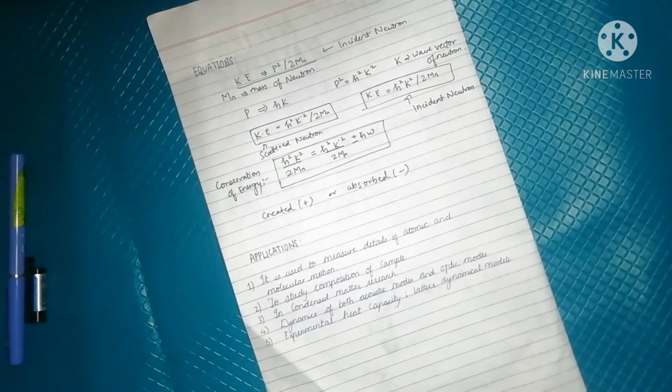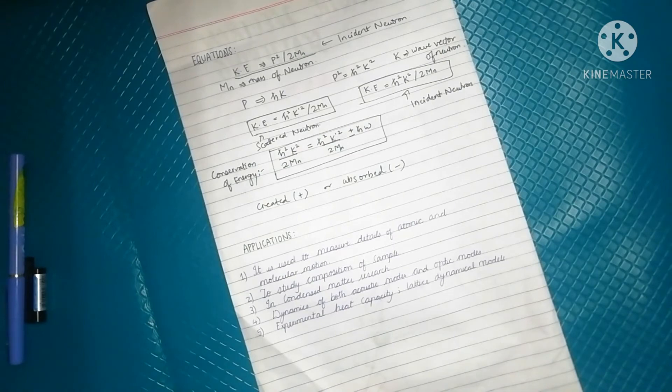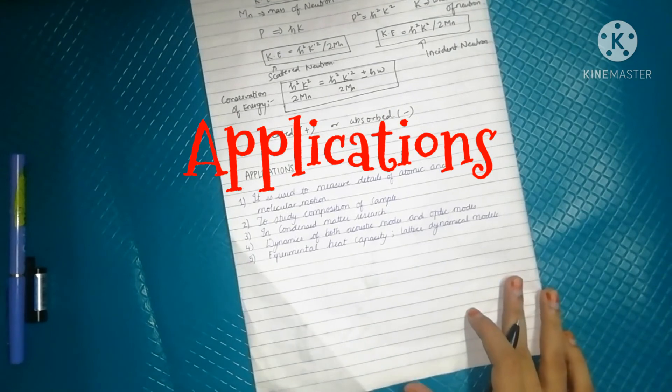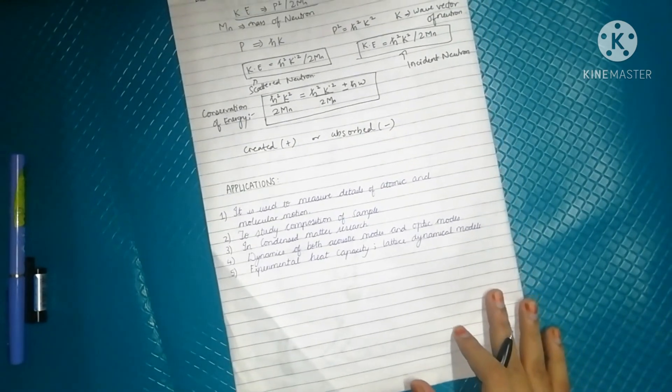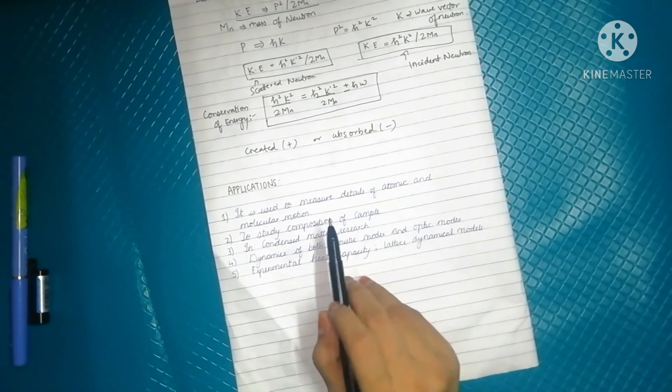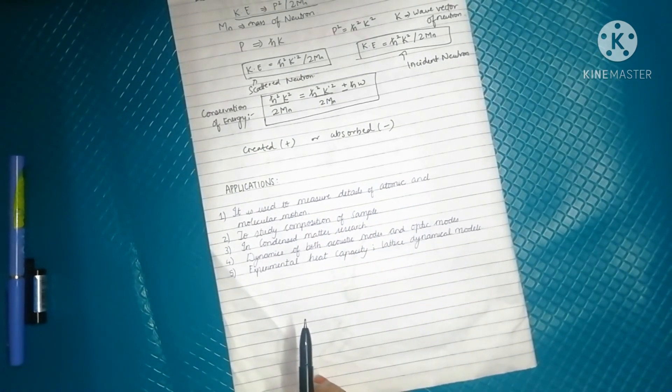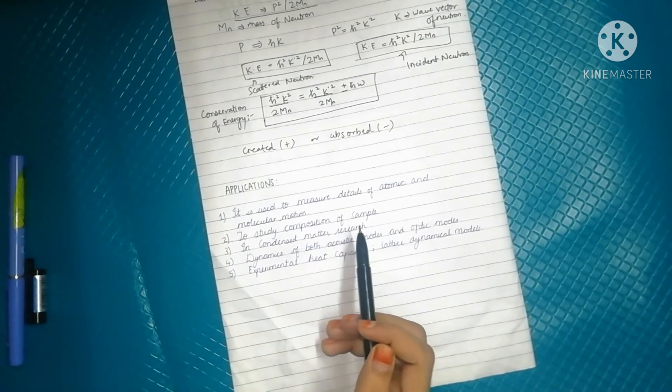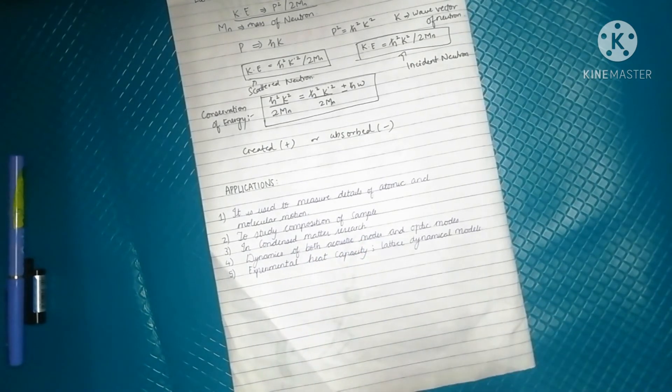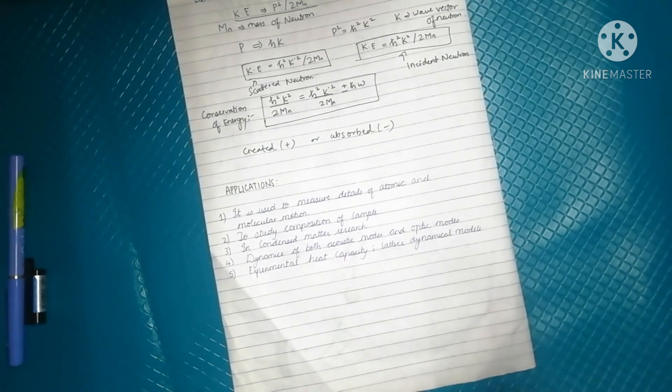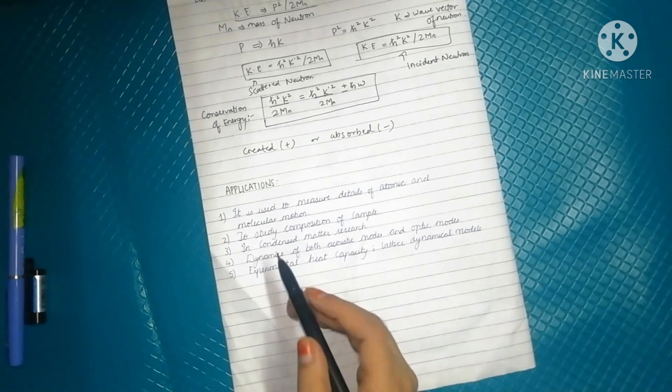This is the equation part. Now we will see the applications of inelastic neutron scattering. The first and foremost application is it is used to measure the details of atomic and molecular motion. We can study the atomic and molecular motion of the sample. Second, it is used to study the composition of the sample, like what are the constituents of the sample, how it's made, what it's made from - all those things can be studied using this technique.